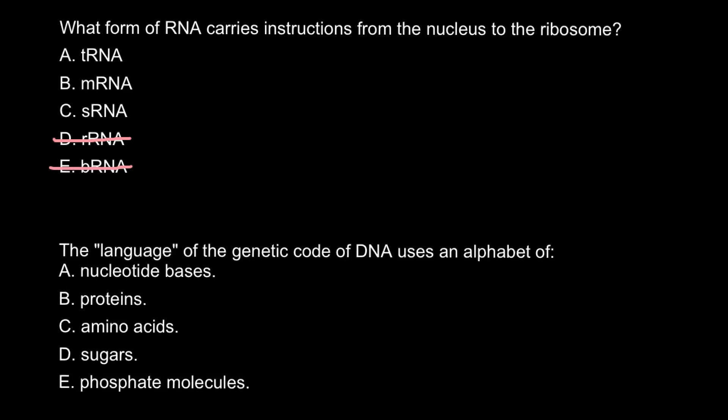Ribosomal RNA is used in order to make a ribosome. So answer C, sRNA, and S here stands for small RNA that can be found for example in bacteria. This also doesn't answer our question, so we cross out this answer.